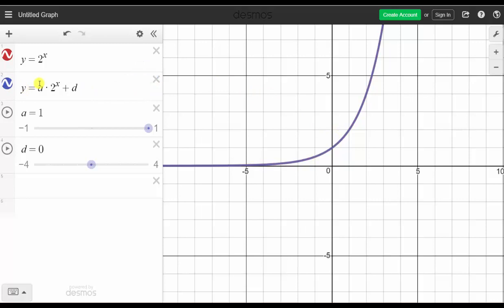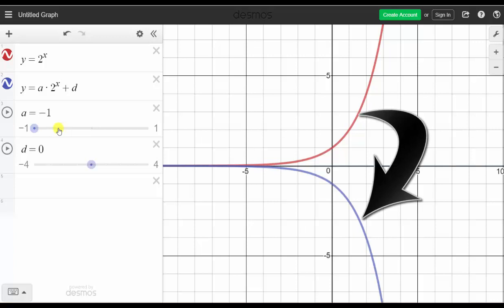And now if we change a to negative 1, we will have the graph of y equals the opposite of 2 to the power of x. Notice when we do this, the new graph is the graph of y equals 2 to the x in red reflected across the x-axis.